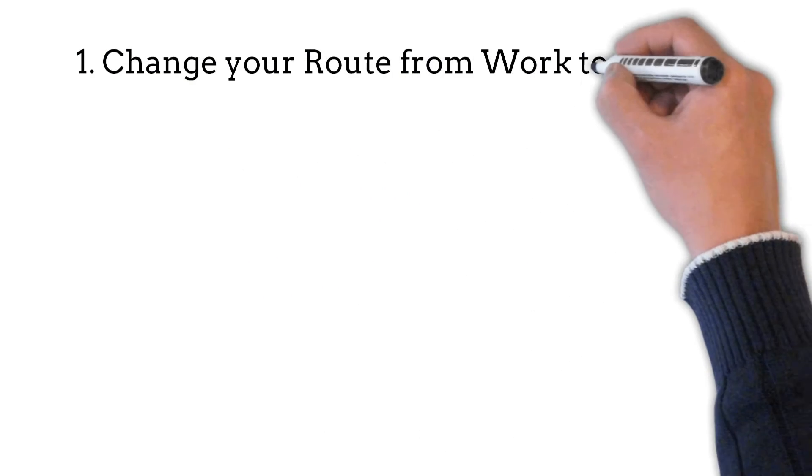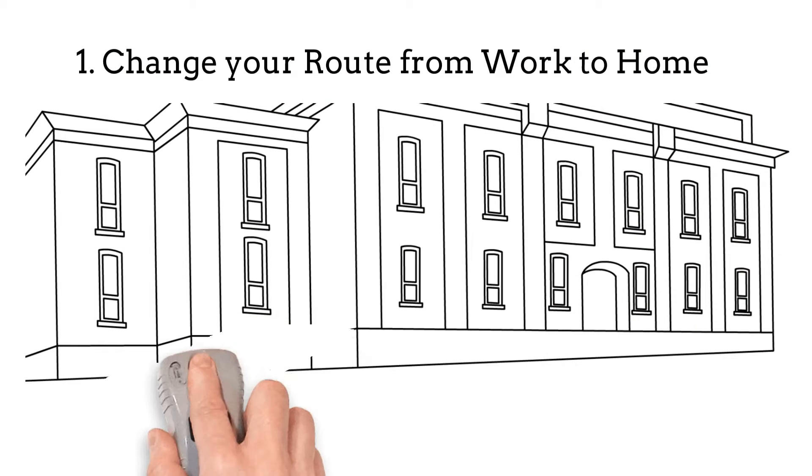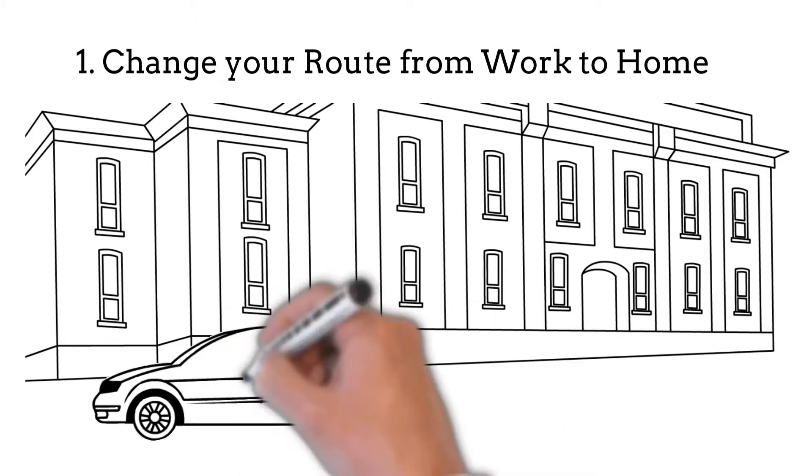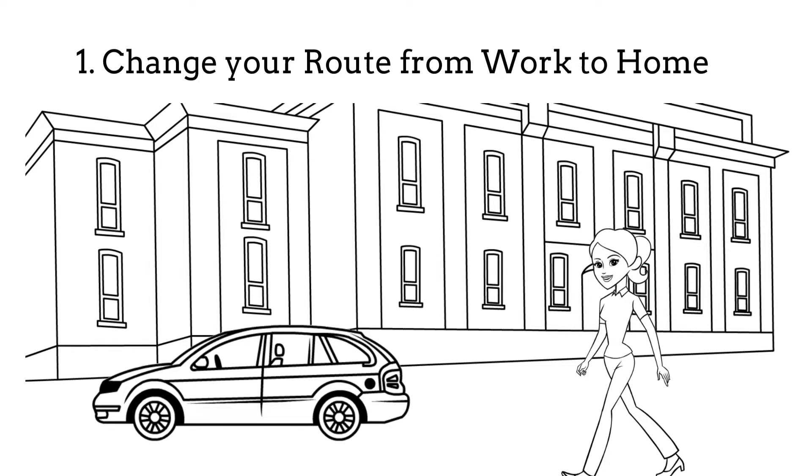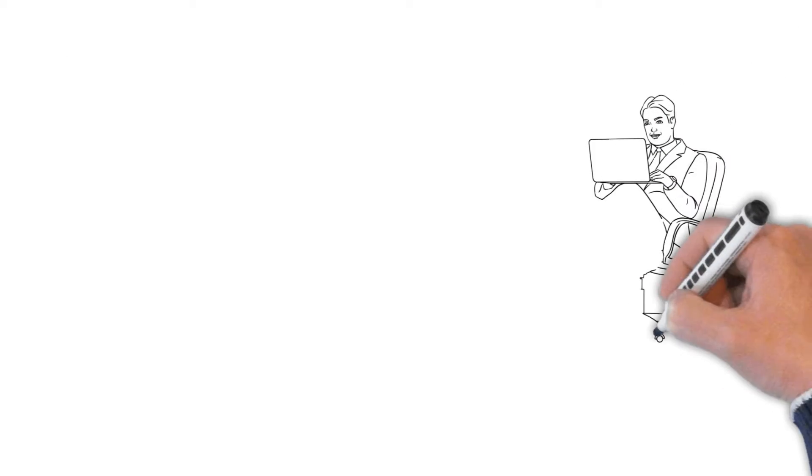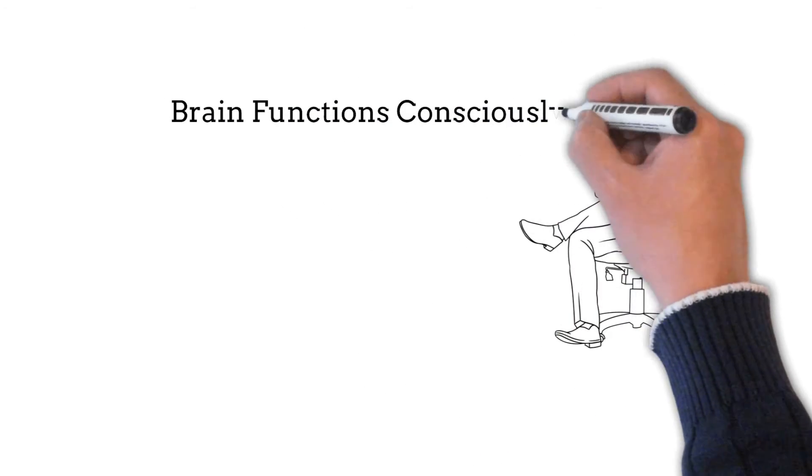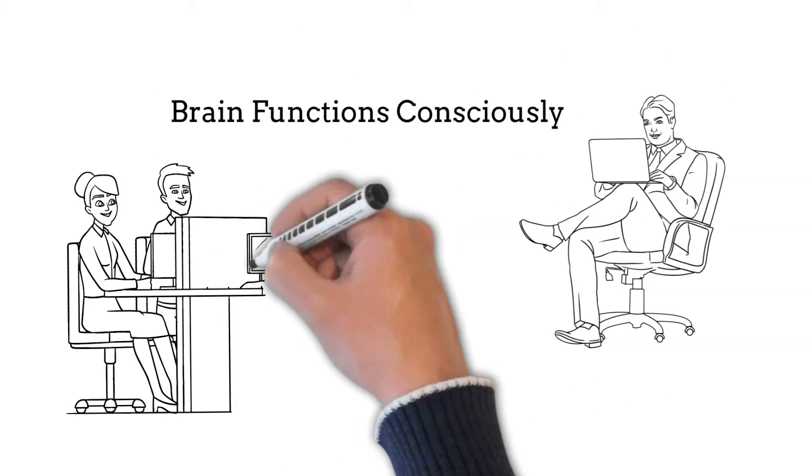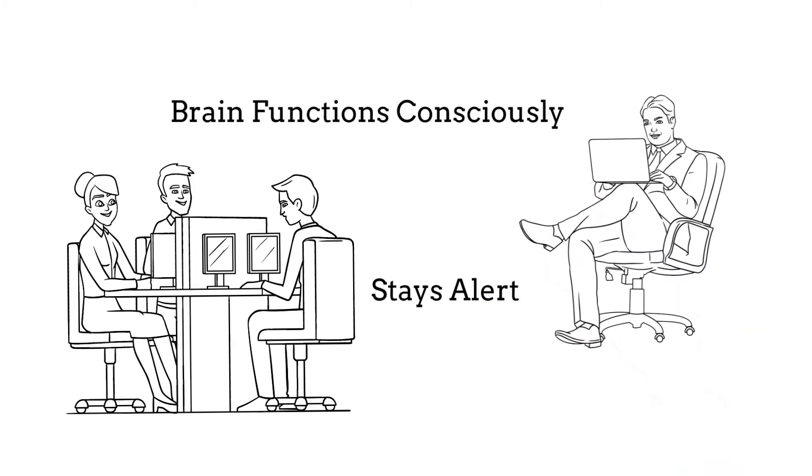1. Change your route from work to home. Whether you drive or walk to or from your work, change the route frequently. When you use the same route regularly as a routine, your brain gets into an auto mode. You might have noticed that sometimes you reach your home without thinking about the route. I have even heard people say that the car knows the way. When you change the route, your brain gets into functioning consciously to adjust to the unfamiliar route. It also sees different and new things. This keeps the brain active.